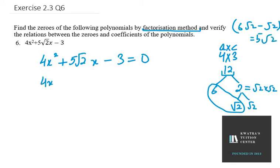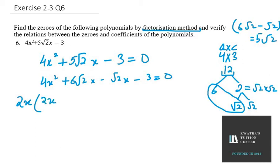So it will be 4x squared plus 6 under root 2x minus under root 2x minus 3 equals 0. Now taking common from the first two terms, it will be 2x, leaving 2x and 3 under root 2. From the last two terms we take out minus 1, leaving under root 2x plus 3 equals 0.